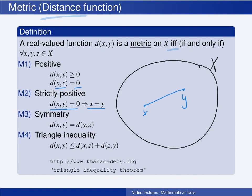From conditions m1 and m2 together, we see that the distance between two different elements — that is, when x is not equal to y — has to be strictly positive. Third, the distance function has to be symmetric: if we measure the distance from x to y, then this has to be the same as the distance from y to x.